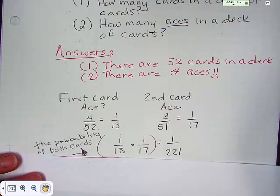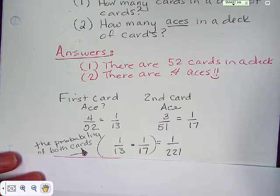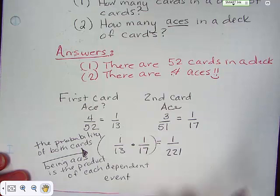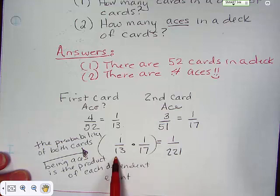So, the probability of drawing two aces out of a deck of 52 cards, one right after the other, is 1 in 221 times. And this says, the probability of both cards is the product of each dependent event. So, here's your final answer.